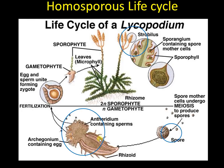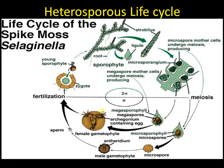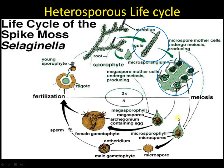Moving to the heterosporous life cycle of Selaginella — the spore-bearing structure is also a strobilus, just like Lycopodium. The strobilus contains both types of spores. There is a megaspore, or female spore, and a microspore. So there is a divergence right here — two kinds of spores. The megaspore gives rise to a female gametophyte bearing the archegonium.